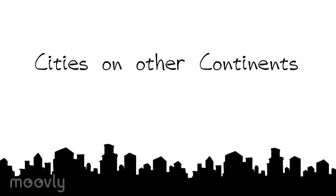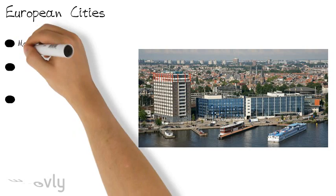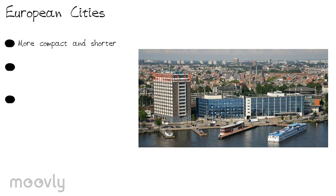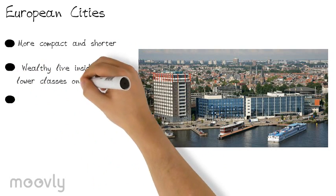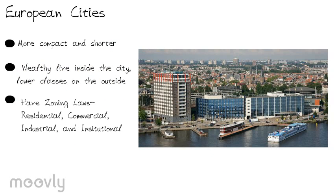Cities in other continents. European cities are older than American cities and thus have different structures. The cities are more compact and shorter, with skyscrapers placed on the outside of town because they have a philosophy that says what is old should be preserved. They are also arranged in the opposite way of an American city, because the wealthy live in the central city and the lower classes live in the suburbs. European cities also have zoning laws split into four types — residential, commercial, industrial, and institutional — but the zones can be mixed.